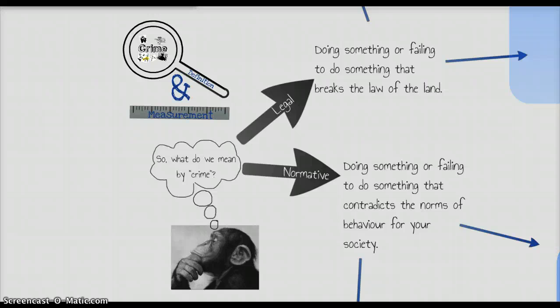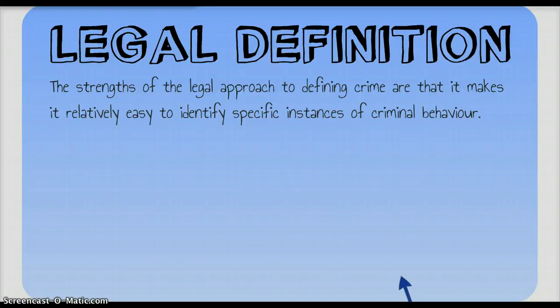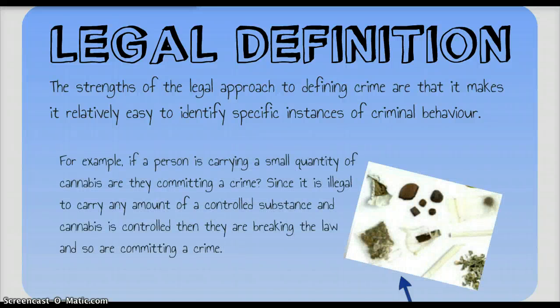So those are our two approaches to defining crime — we either go down a legal route or a normative route. The legal definition has some very clear strengths. It makes it relatively easy to identify particular instances of criminal behaviour. A classic example would be, in the UK, carrying a small amount of cannabis — not even enough to make a joint. Because it is illegal to carry any amount of a controlled substance, and cannabis is a controlled substance, under the legal definition we would say that person was committing a crime.